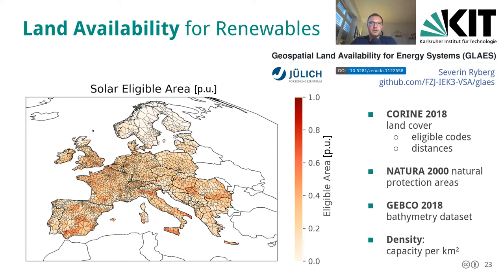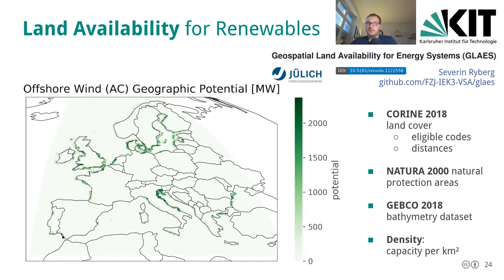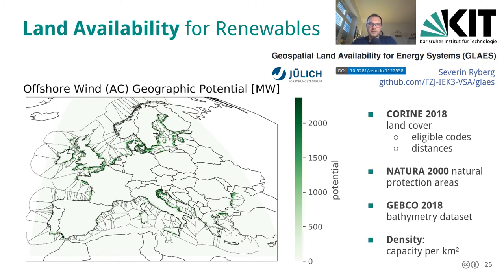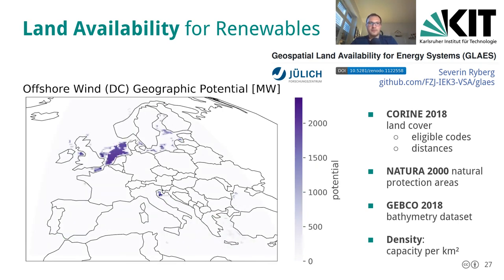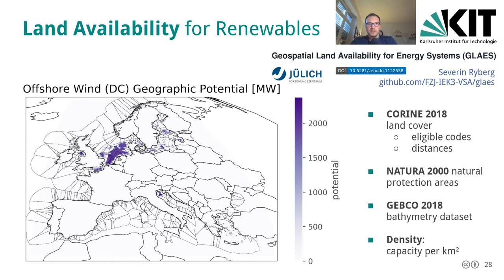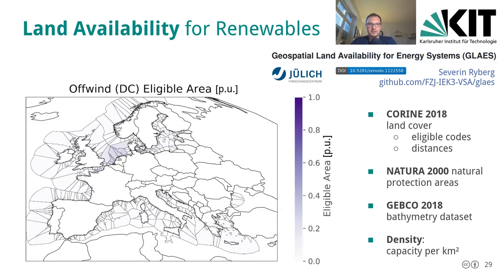We also have offshore wind split into AC-connected and DC-connected. Looking at the AC lines in green, we have connections closer to shore, and there is a distance limit where the split between AC and DC connection occurs. When we overlay the Voronoi cells of the offshore regions, we get some value for each Voronoi cell. We can do the same for offshore wind DC — there is quite a lot in the North Sea region, further from shore, where we don't connect via AC lines — and again overlay the Voronoi cells to get a value for each cell.